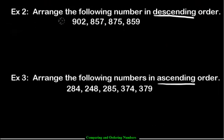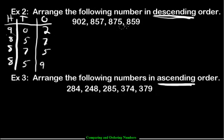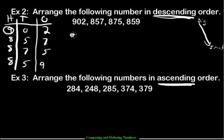So here we have two questions. One says arrange the following numbers in descending order, the other in ascending order. We again start by making our tic-tac-toe square. Descending means going down the mountain — we start with the big numbers first and end with the small numbers. The number with the most hundreds is the biggest, and this one has the most hundreds so it goes first.